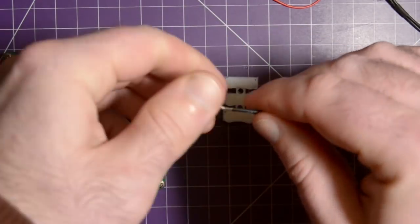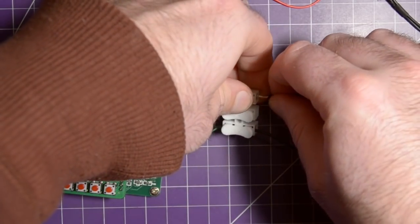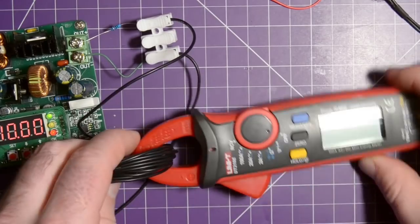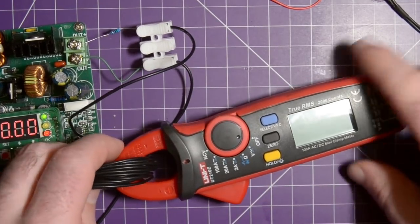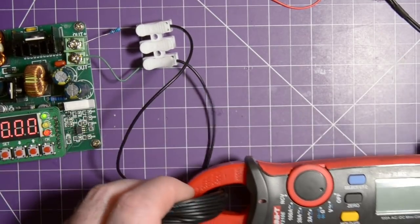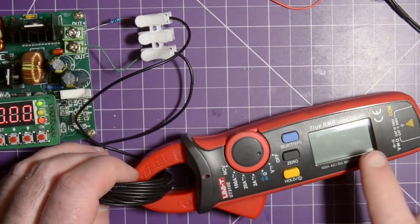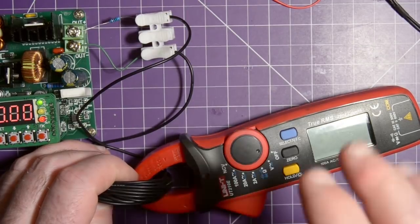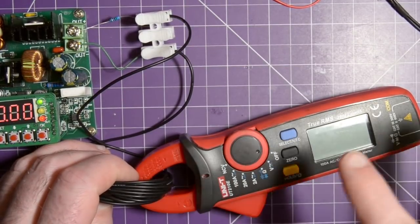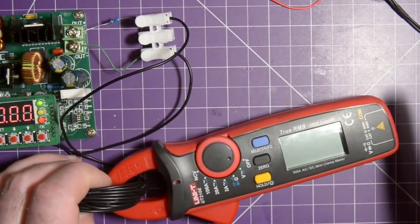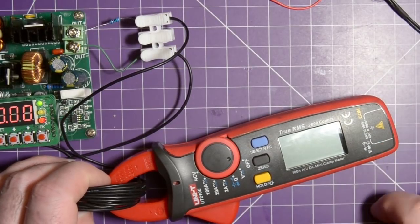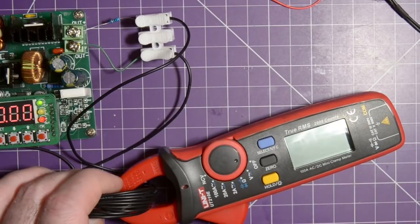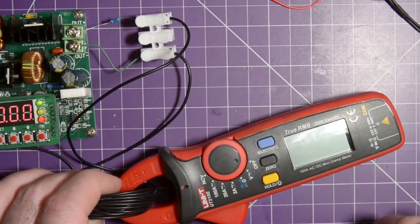So now we should be able to get a reading on this clamp meter. We should be able to get a reading that'll be twenty times higher than what the actual amperage is. So in this case we should see about 26-27 milliamps, which is 0.01333 repeating times twenty.